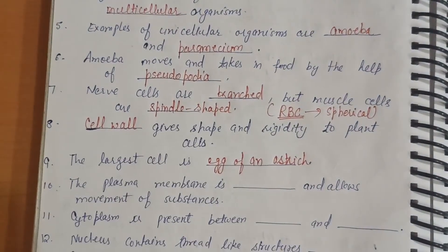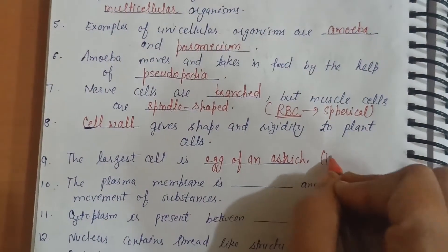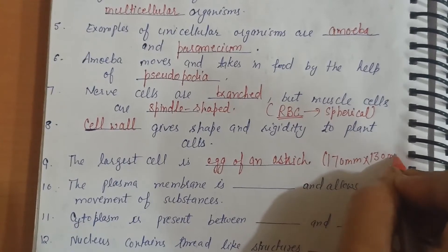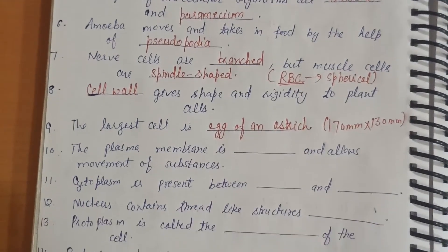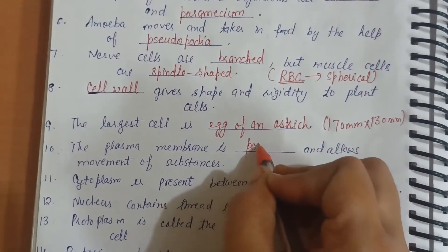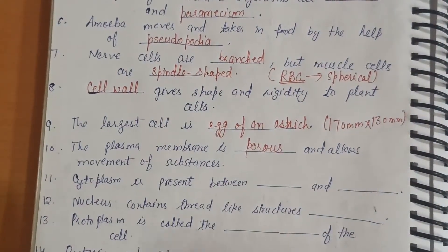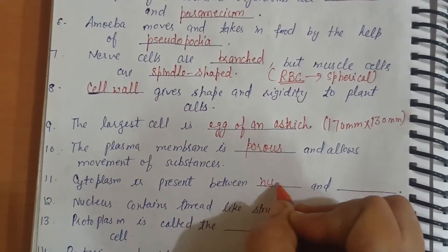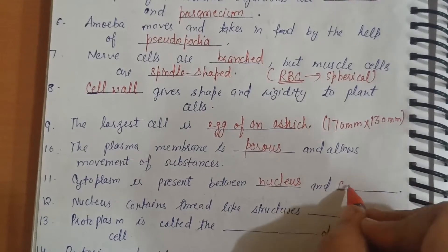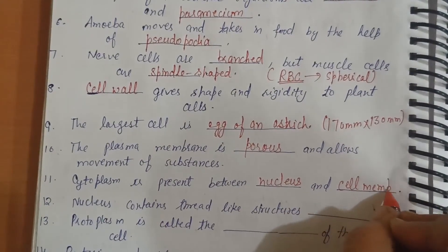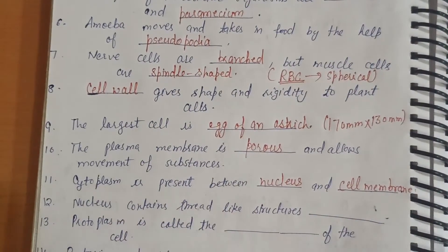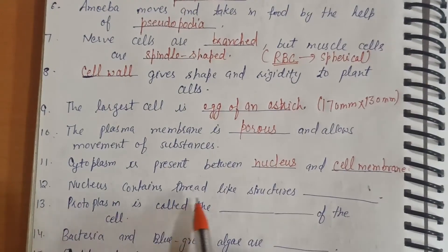The size of the ostrich egg is 170 mm by 130 mm — this is the largest cell. The plasma membrane is porous, and it allows movement of substances in and out of the cell.